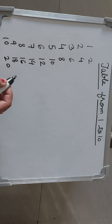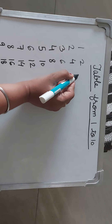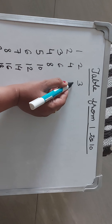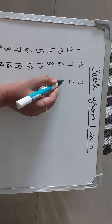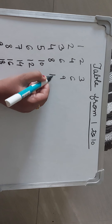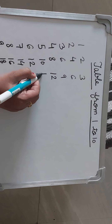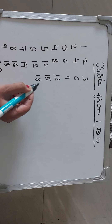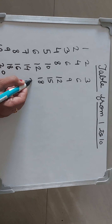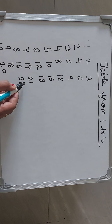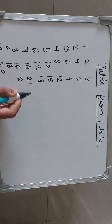2 10s are 20. Now table of 3. 3 1s are 3, 3 2s are 6, 3 3s are 9, 3 4s are 12, 3 5s are 15, 3 6s are 18, 3 7s are 21, 3 8s are 24.